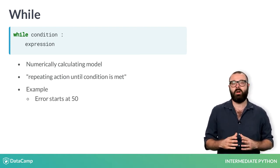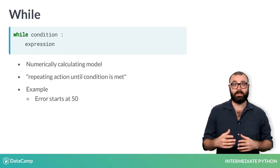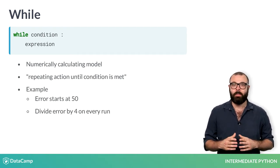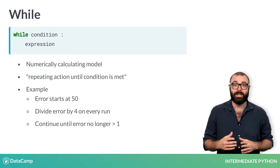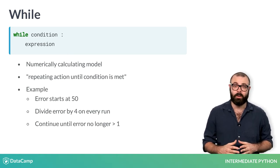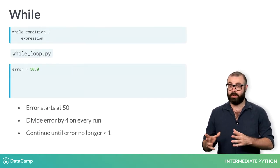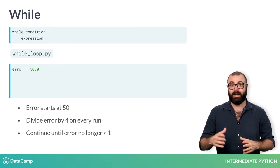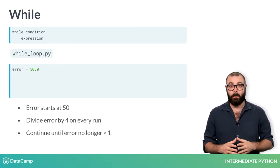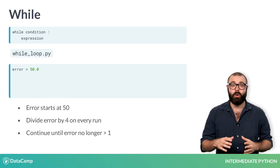Say that we start with an error of 50 and that our fancy algorithm divides the error by 4 on each run. We want to keep going until the error is no longer above 1. Now, heading over to the script, we start by adding the error we start with, 50. Next, we write a while loop.